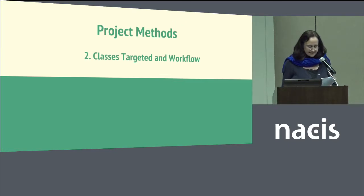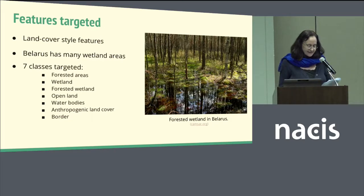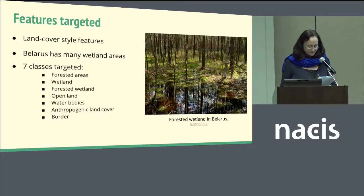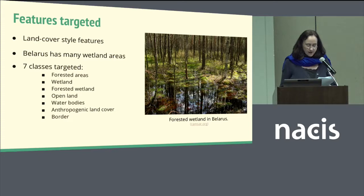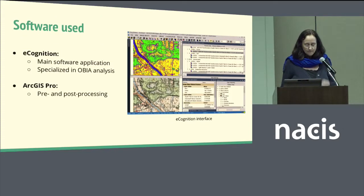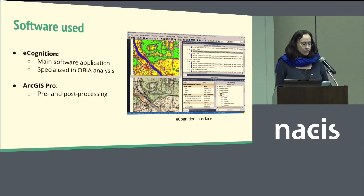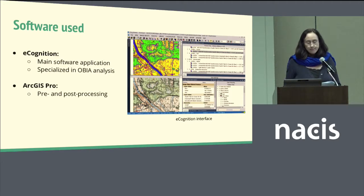In this analysis, I focused most particularly on extracting land cover style features. Belarus has many wetland areas, so identifying wetlands was an important aspect of the project. I targeted seven classes, such as forested areas, wetlands, water bodies, etc. The software used was eCognition, which is a software package specialized in OBA image analysis, and I also used ArcGIS Pro for pre- and post-processing steps.